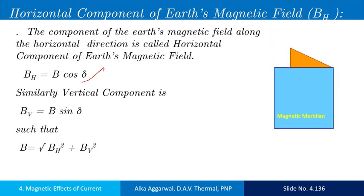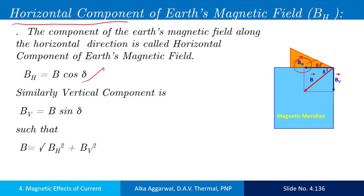In the diagram, this is the magnetic meridian and this is the geographic meridian. This angle is the angle of declination, and this angle is the angle of inclination or dip. The horizontal component of the earth's magnetic field is drawn along the horizontal direction and its value is B cos delta. The vertical component is B sin delta.